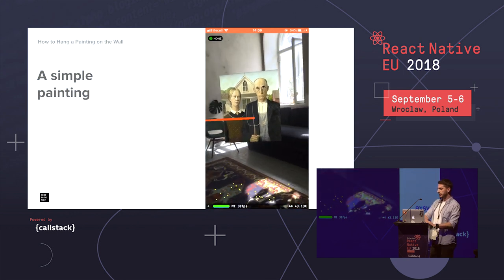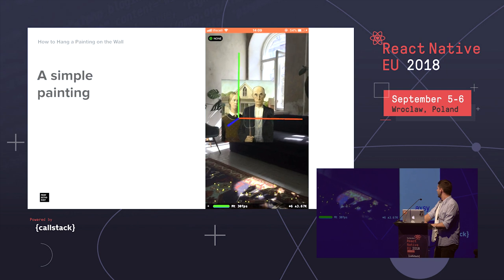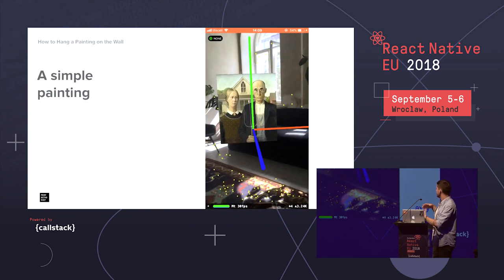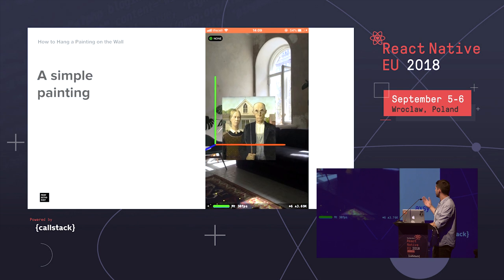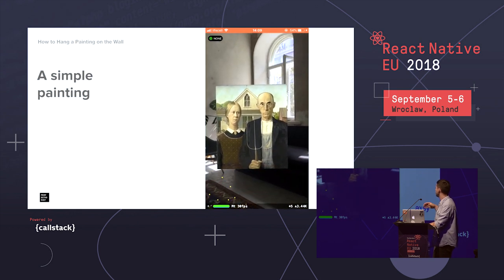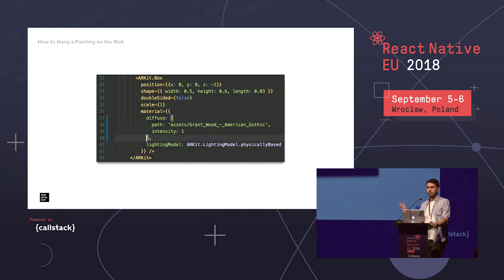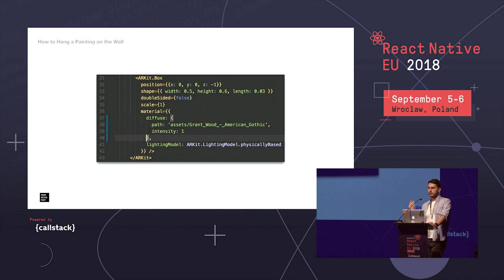Now that we understand all this, we can remove all the boilerplate code and try displaying our simple painting. It's just floating in the world — you can go around it and look at it from different angles and it stays in place. The painting is basically an ARKit box object: a component with fixed height and width, 3 cm thin, with the image applied as a material property. We set X and Y positions to 0 so it appears in front of the camera, and Z to -1 so it appears 1 meter in front.